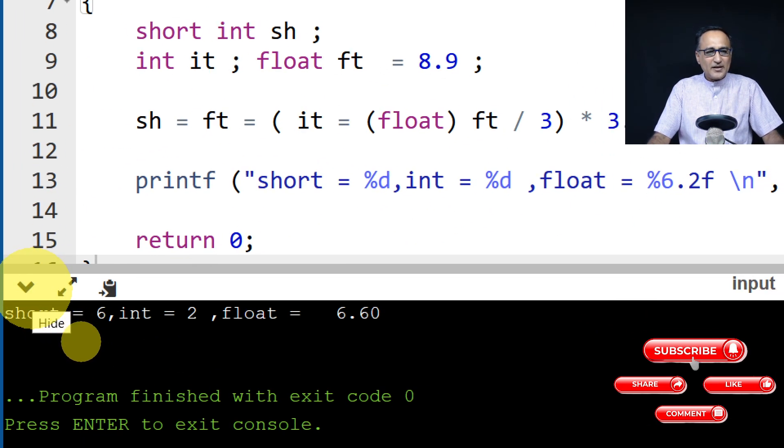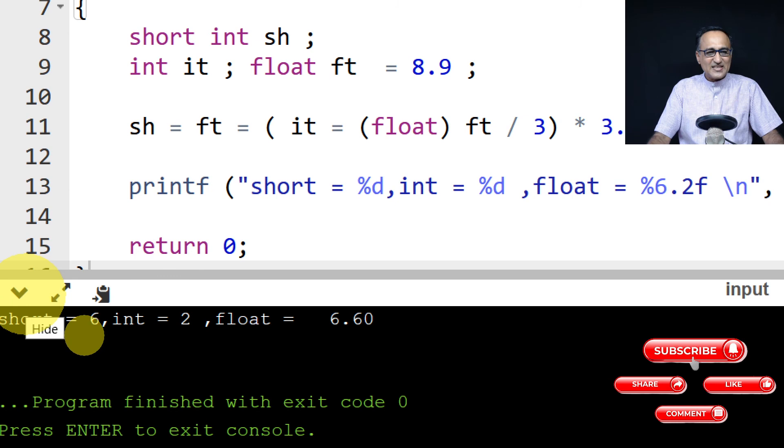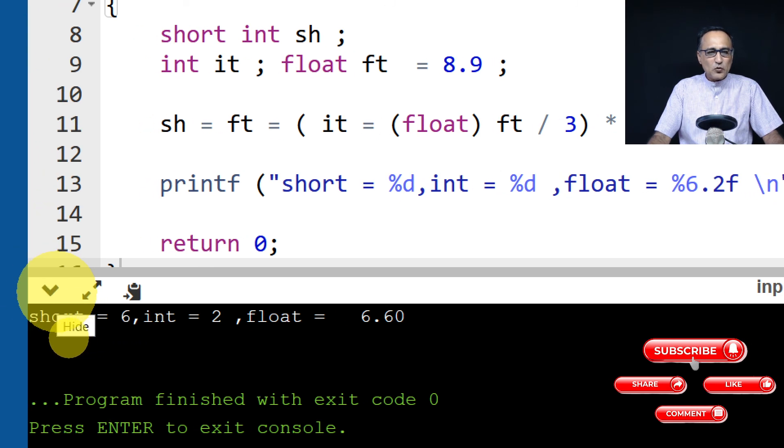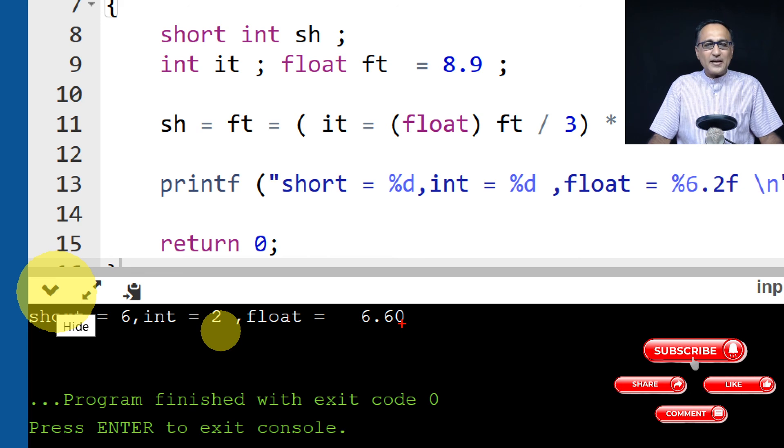So as I said, short int has happened to be six, int has happened to be two, and float has turned out to be 6.6. So this should give you a clear idea of the basic explicit data type casting and how things work.